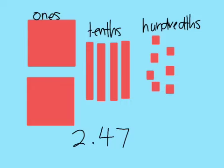For your first task there are some decimal numbers written on the board. You're going to need to use the wooden blocks to show that decimal number, take a photo of it and upload it to your Seesaw.